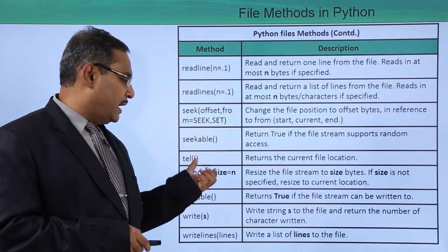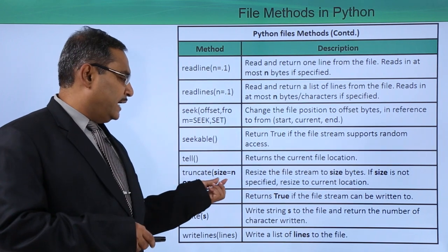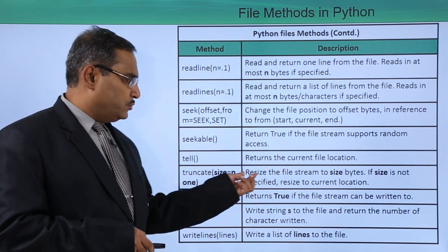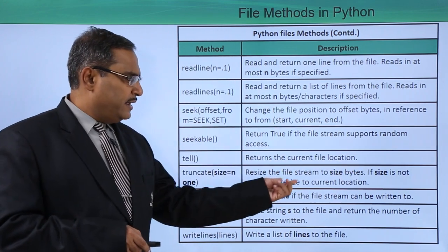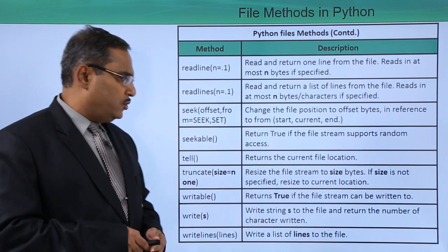It is the same because we are not passing any parameter to that. Truncate size equals n1 - resize the file stream to size bytes if the size is not specified it is resize to the current location.